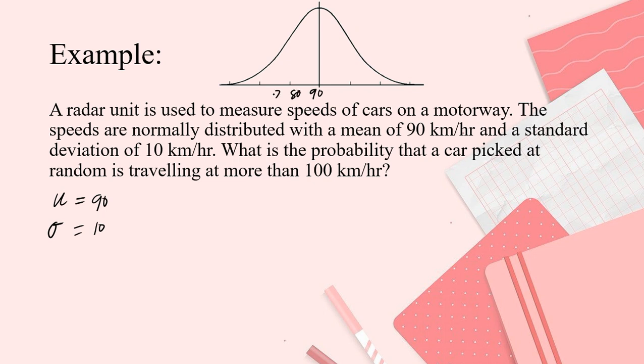Okay, now, it says the probability that the car you choose is traveling more than 100 km. So, now, your X-score is 100. What does it say about 100 km, more than 100 km. This is your 100. So, let's say this is your 100. And what you're looking for is the probability that it's more than 100. Where is that now? This is it.